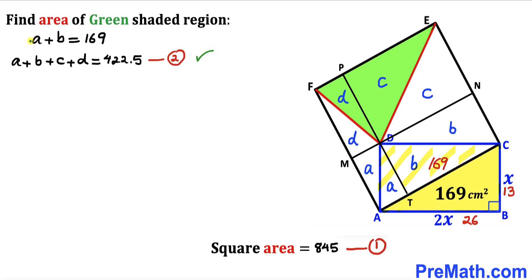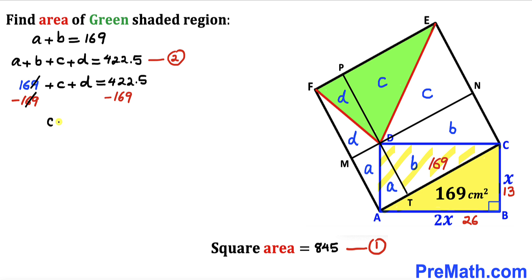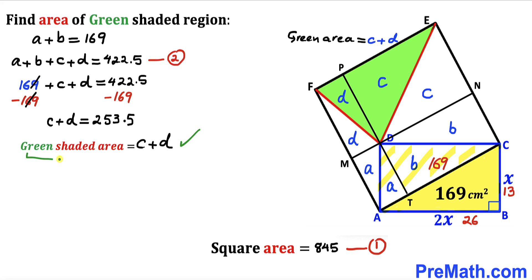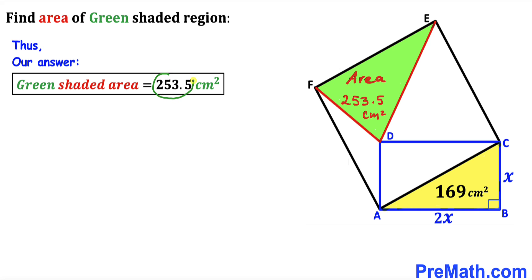Substituting a + b = 169 into equation two: 169 + c + d = 422.5, so c + d equals 253.5. We observe that the green shaded triangle's area equals c + d. Therefore, the green shaded area turns out to be 253.5 centimeters square.